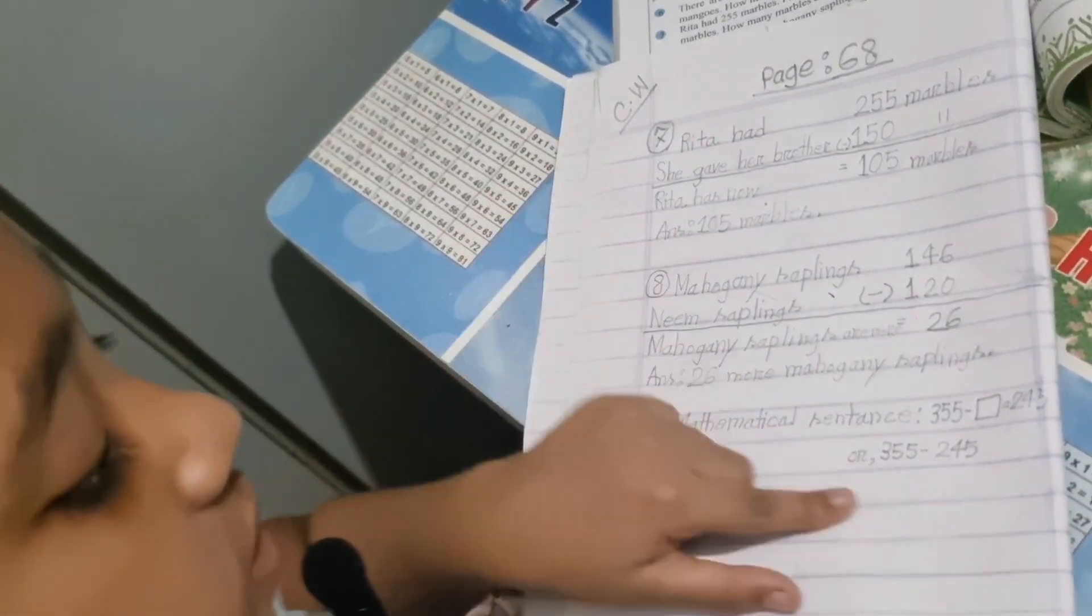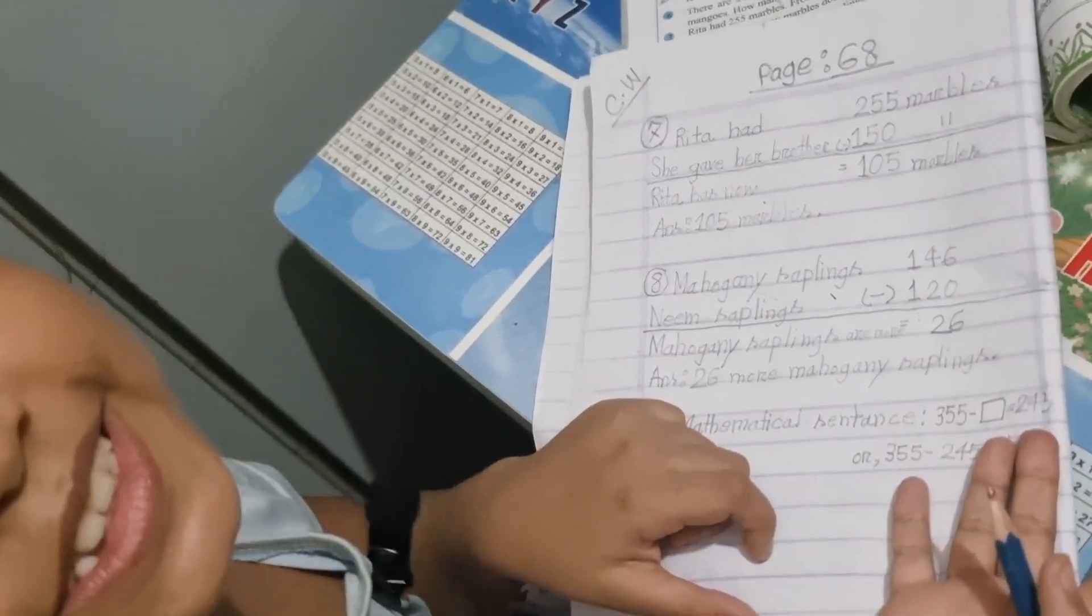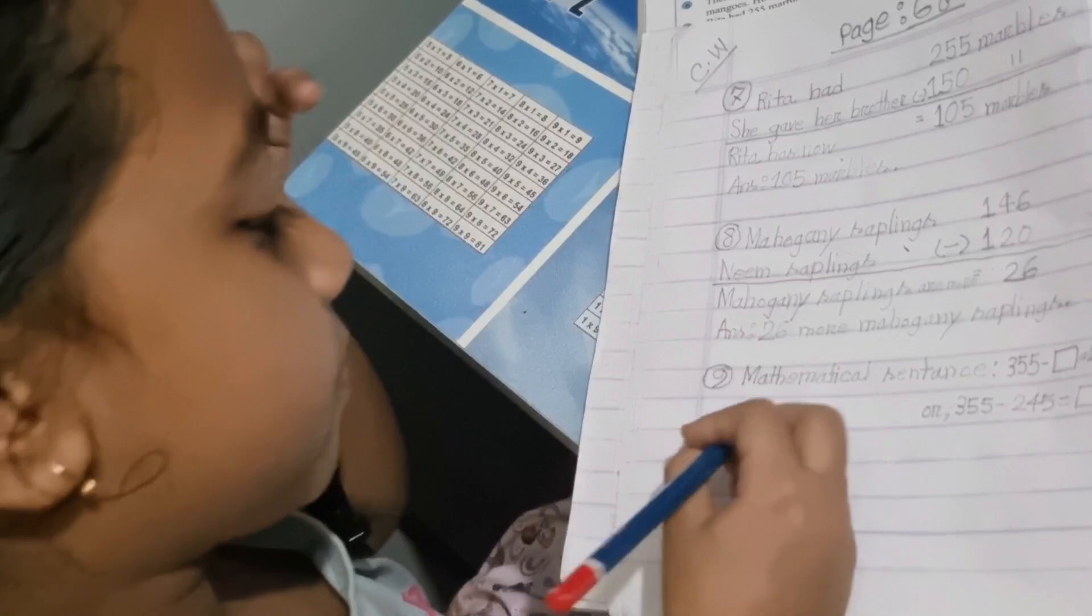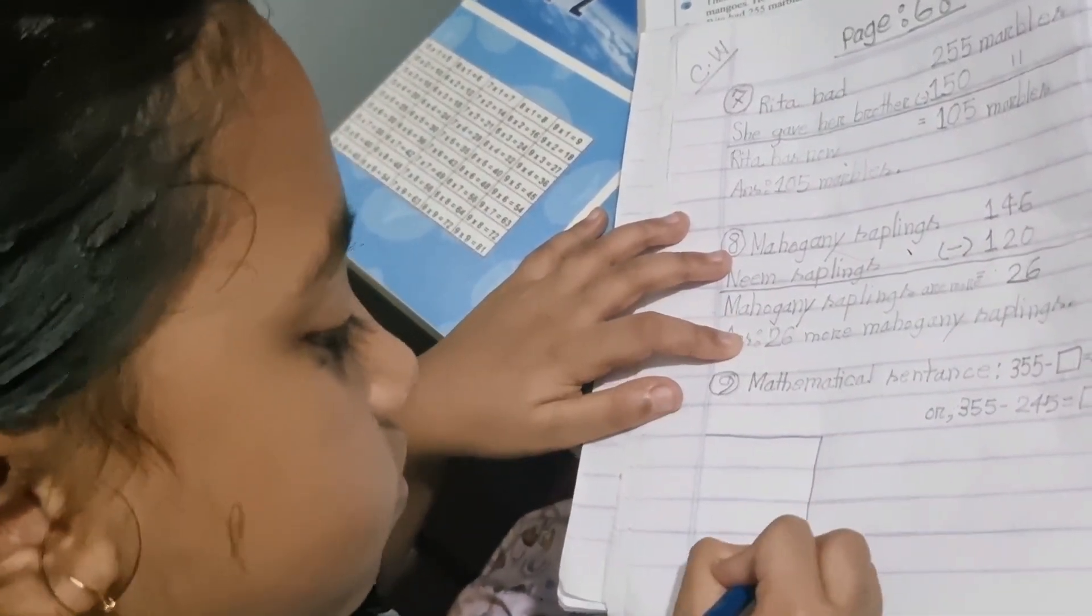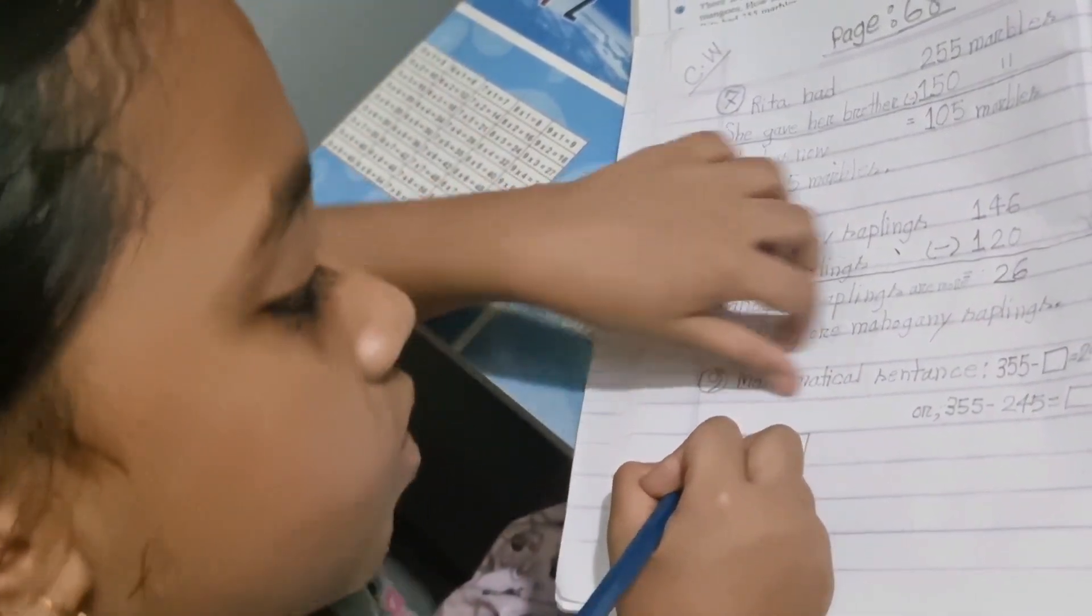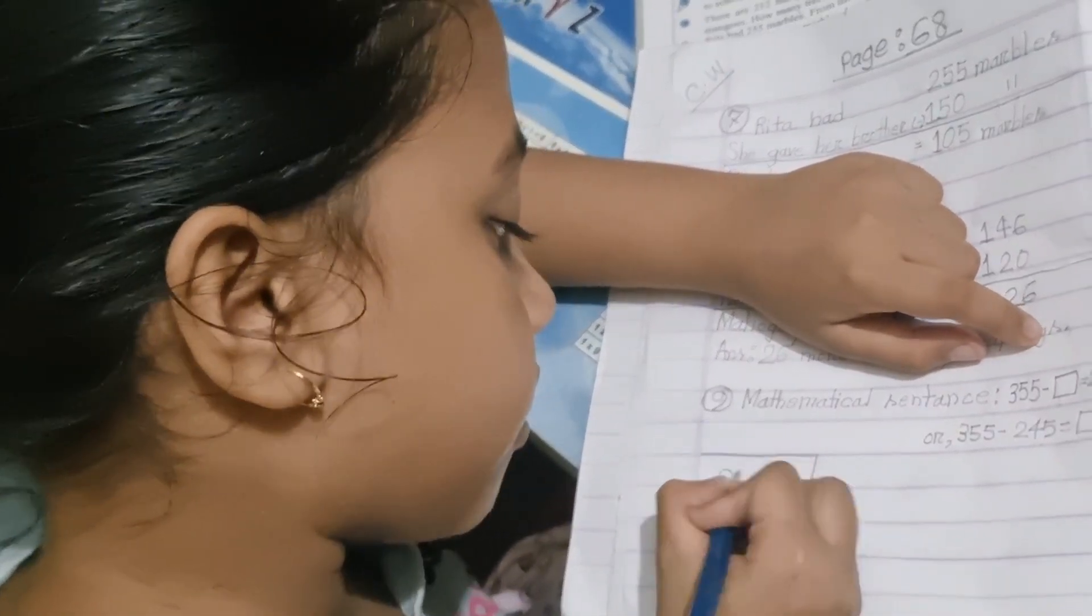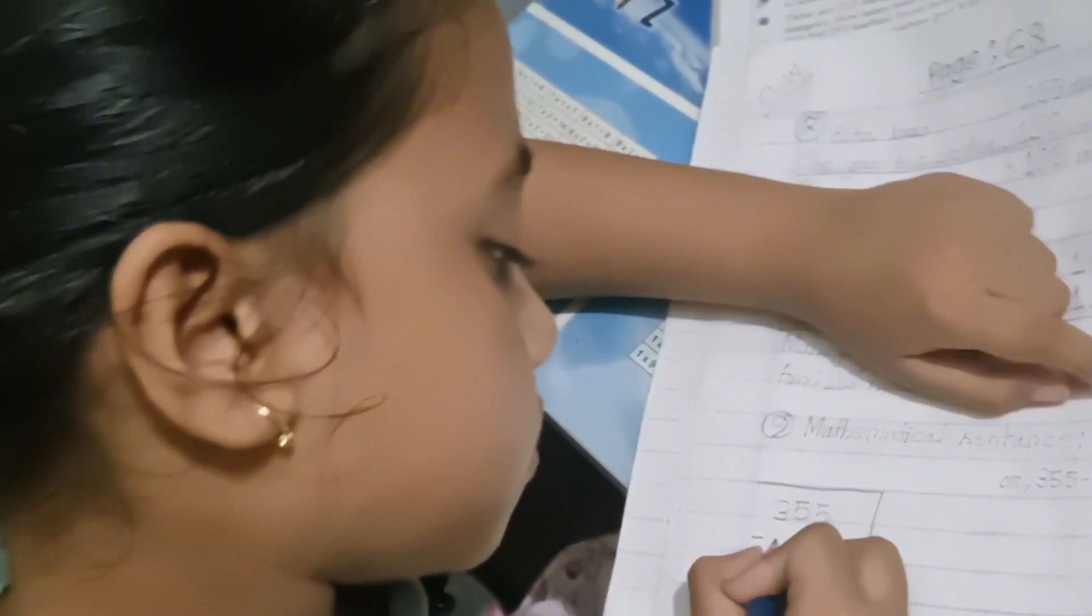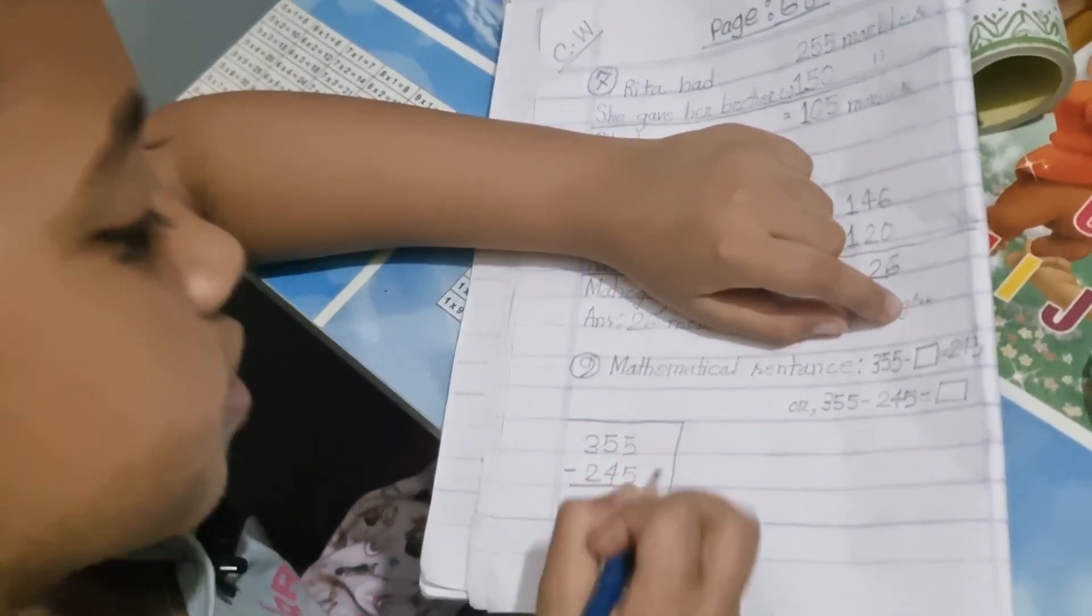So let's do our rough work. 355 minus 245 equals what? 5 minus 5 is 0, 5 minus 4 is 1, 3 minus 2 is also 1.